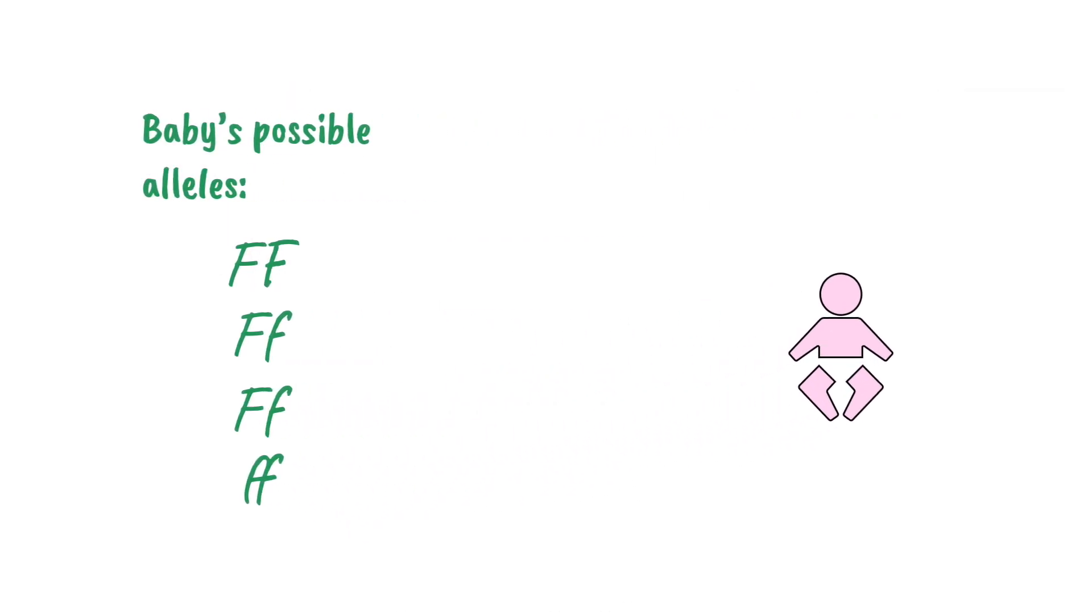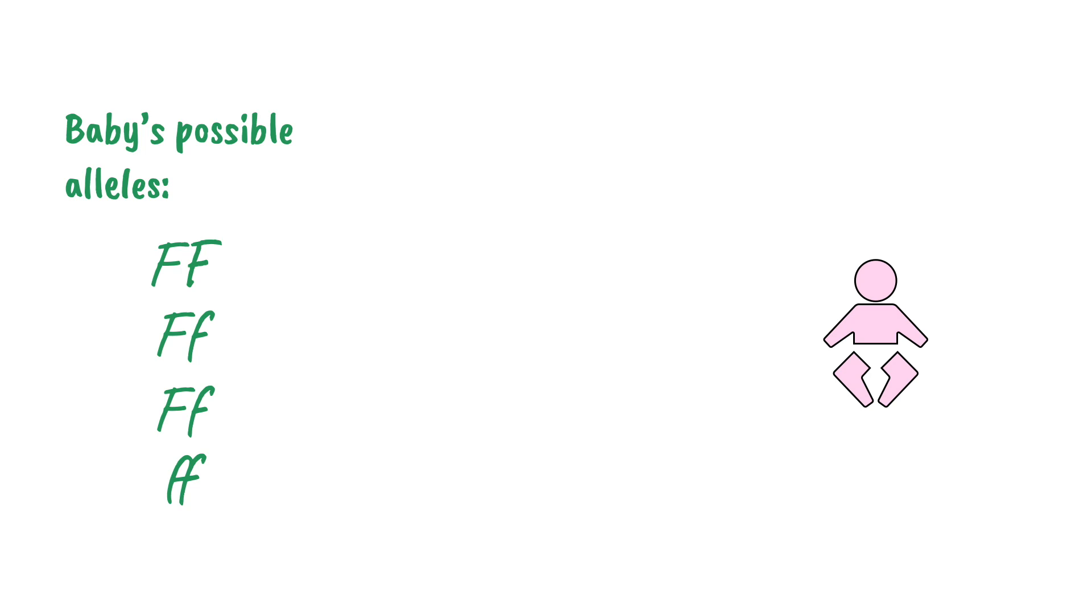So what do these combinations mean in practice for this baby? Remember that uppercase F is our symbol for normal, or doesn't have cystic fibrosis. So if the baby were by chance to inherit this combination, they would not have cystic fibrosis. Lowercase f represents the cystic fibrosis version, and if the baby inherited this combination, they would suffer from cystic fibrosis.